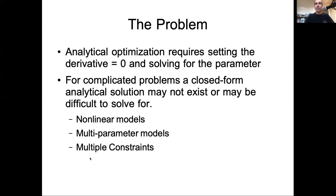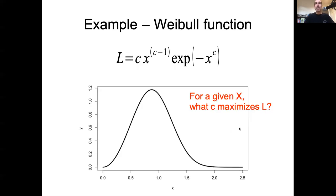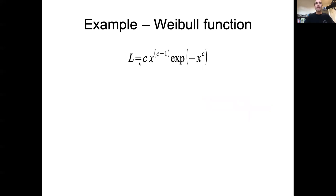Just as a really simple example of that, consider the Weibull, which is a probability density. It has this parameter c here that we're going to focus on. And we might ask the question: for a given x, what value of c maximizes this likelihood? So we've written down the likelihood, and here's a plot. Intuitively, it's going to be somewhere a little bit below one, but how do we analytically derive for that?